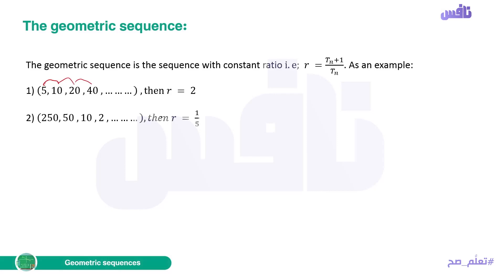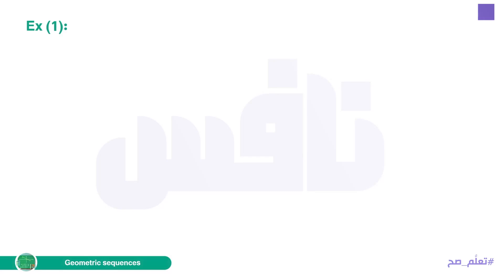Another geometric sequence is 250, 50, 10, 2. Here R equals one over five, since each term is divided by 5 (or multiplied by 1/5).